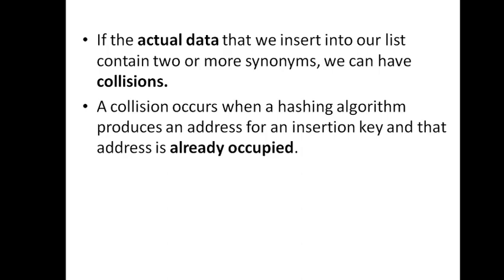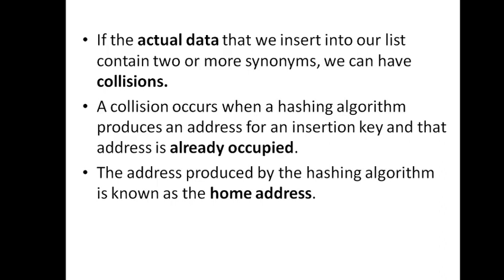When a collision occurs, you want to store a new key, apply the hash algorithm, find the address, and discover that address is already occupied by a synonym key. That situation is called a collision. The address produced by the hashing algorithm is known as the home address.